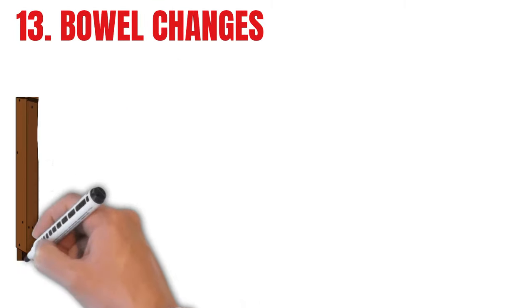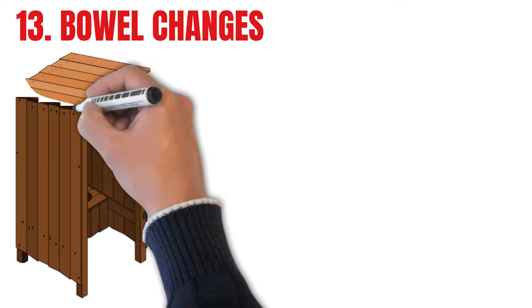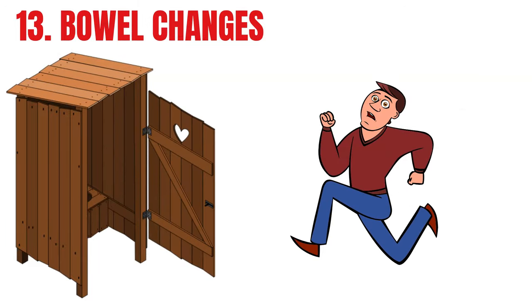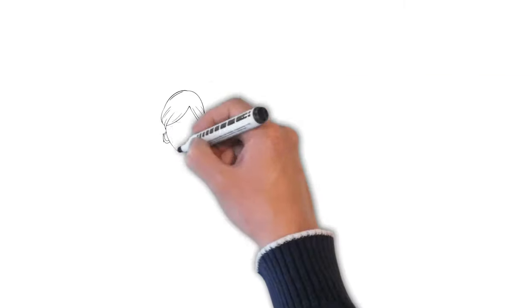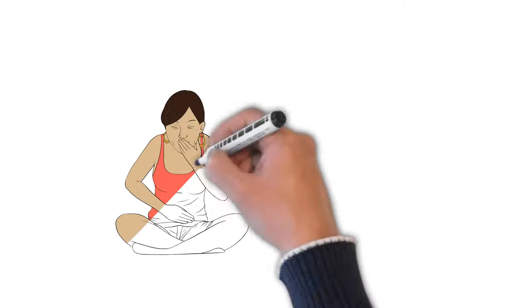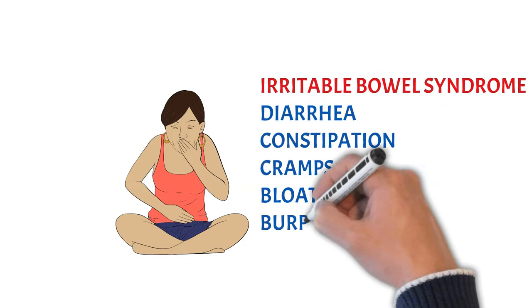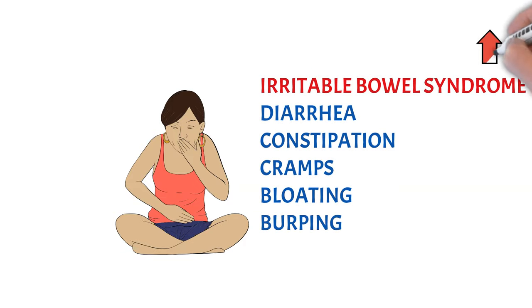Thirteen. Bowel changes. Anxiety can cause digested food to move through the bowel quicker, leading to loose bowels. There is also a link between anxiety and irritable bowel syndrome, which can cause diarrhea or constipation, as well as abdominal cramps and bloating. And yes, you guessed it, I have a video on that also.